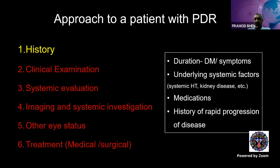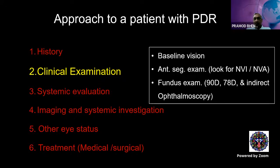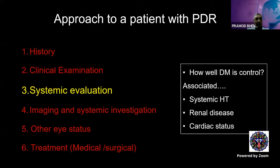Coming to history: we need to know the duration of diabetes and symptoms, and ask for associated systemic factors like hypertension and kidney disease, which are commonly associated with long-standing diabetics. Ask whether the patient is taking any medications, and especially note any history of sudden worsening of symptoms. Clinical examination includes baseline vision, anterior segment examination — specifically looking for iris and angle neovascularization — and fundus evaluation using indirect ophthalmoscopy and slit-lamp biomicroscopy.